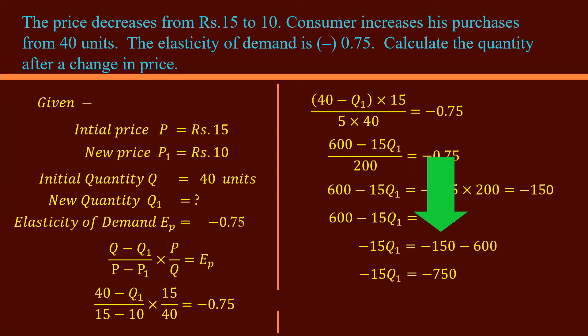Take 600 to the left hand side. The positive 600 becomes negative 600. Negative 150 and negative 600 are added: negative 750. Negative 15 is taken to the right hand side. Negative 750 divided by negative 15 is 50. Keep in mind, when you divide one negative value with another negative value, we get a positive value.